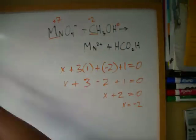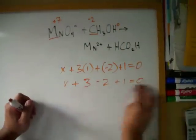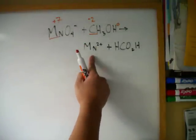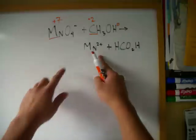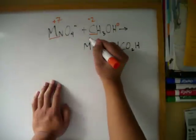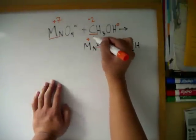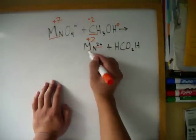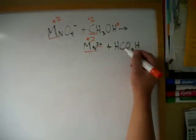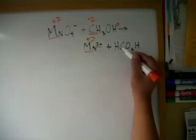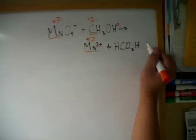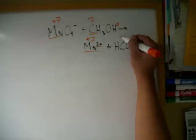We don't really have to do that for Mn on this side of the equation, because it's already there — it's a plus two charge for Mn. And then for carbon on this side, we go x plus one minus four. One minus four is three, plus one is negative two, and that equals zero. So x is two.